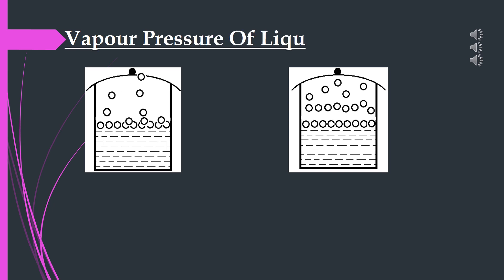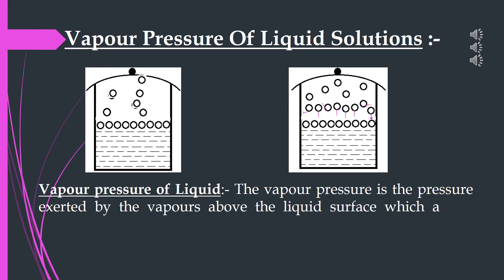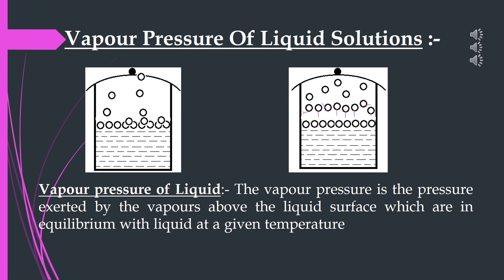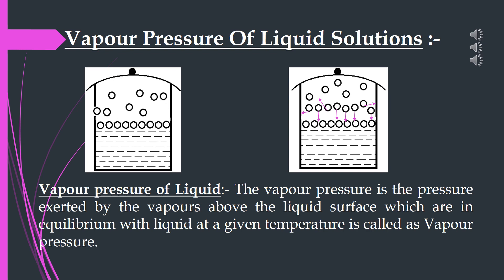Vapor Pressure of Liquid Solutions. So what is Vapor Pressure of a liquid? The Vapor Pressure is the pressure exerted by the vapors above the liquid surface which are in equilibrium with the liquid at a given temperature. Here we are talking about evaporation, not boiling. The molecules present on the surface of liquid gain enough energy from the surroundings and escape the liquid surface into vapor state. As the container is closed, some of the molecules condense back to the liquid form. After some time, an equilibrium is attained between the rate of evaporation and rate of condensation. So at a given temperature, these liquid vapors above the liquid surface apply pressure — that pressure is known as Vapor Pressure.